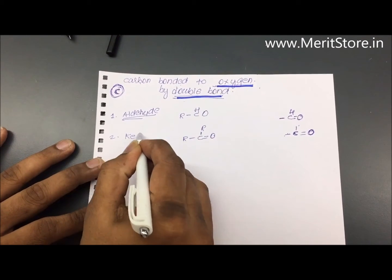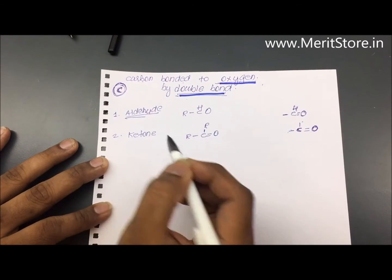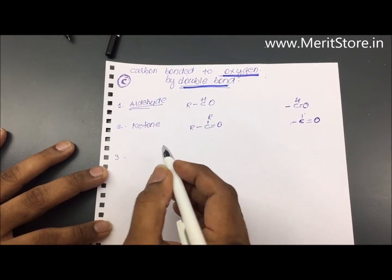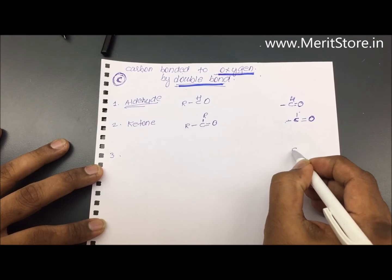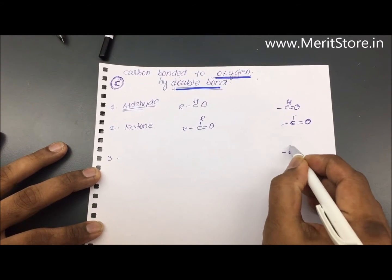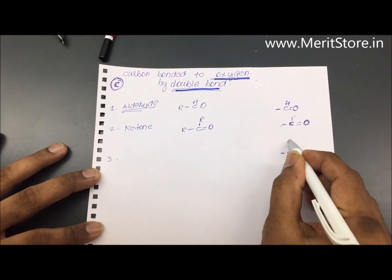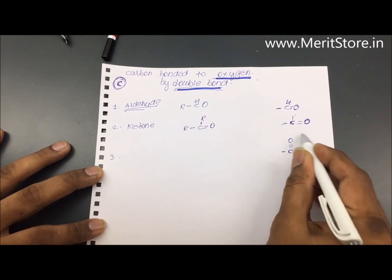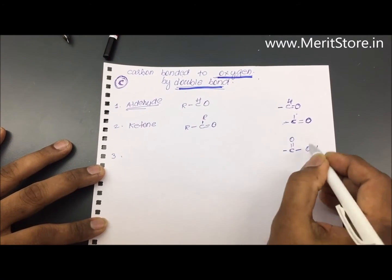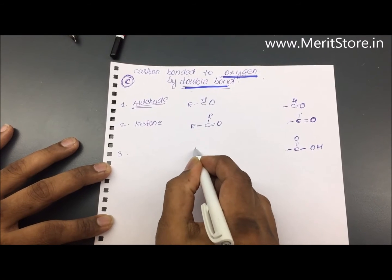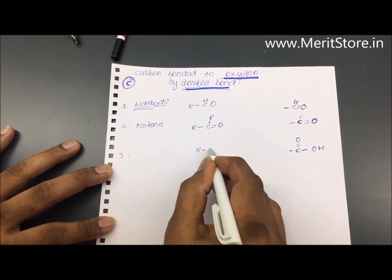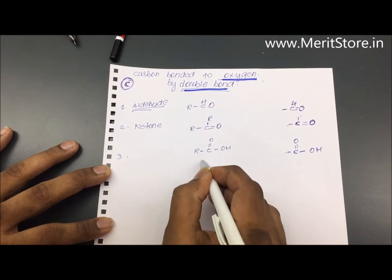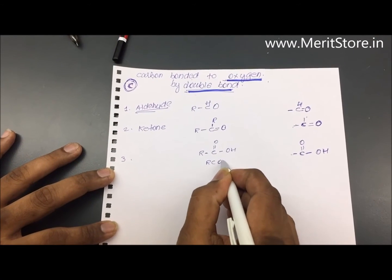The third case is where we have a C=O double bond and an OH group together. This gives us R-COOH, which we call carboxylic acid.